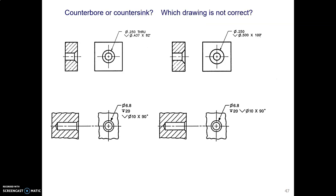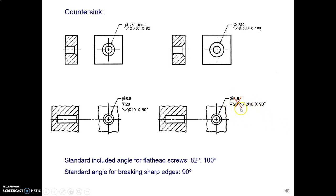Okay, what have we got here? Counterbore or countersink? We've got countersinks. Which one is not correct? Well, it turns out it's this one down here. The standard countersink angles for screws and bolts are 82 degrees or 100 degrees. They're not 90 degrees. And the big deal is we don't give a depth for a countersink. We just tell them the diameter and the angle, and that's it.